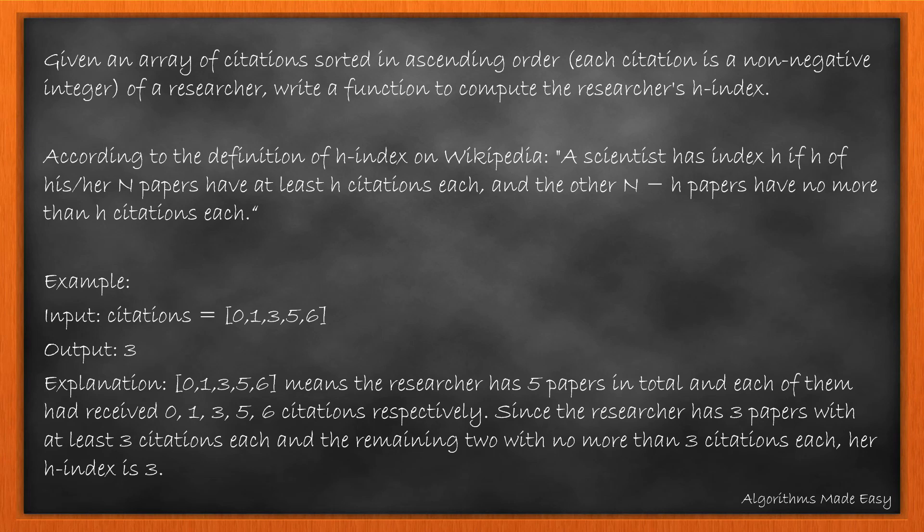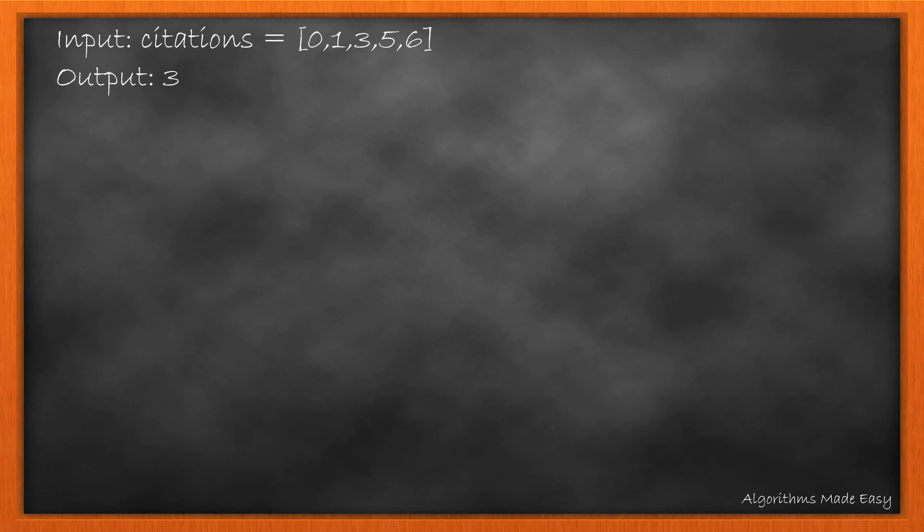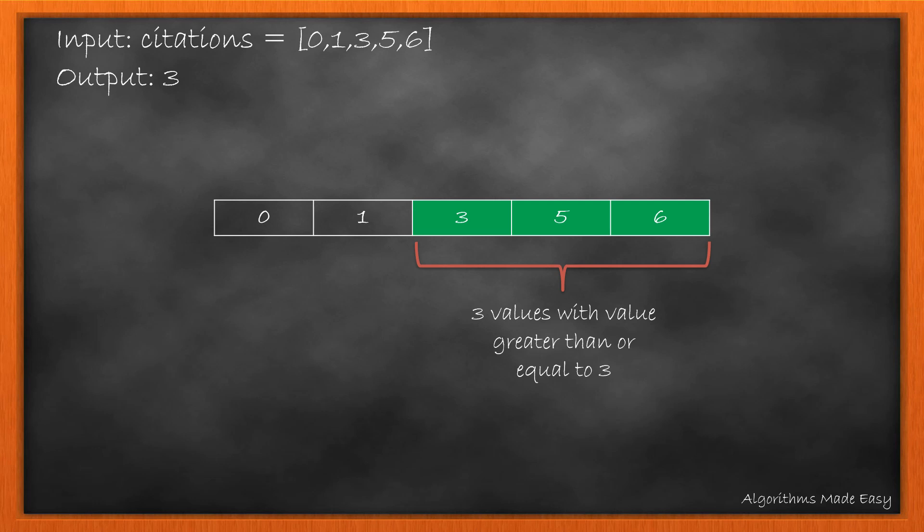Let's see it visually. Let's take the same example. So we can see that there are 3 values with value greater than or equal to 3 while other N-H that is 2 less than or equal to 3.